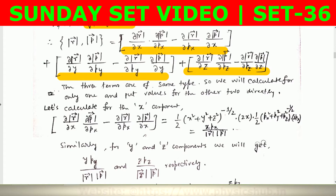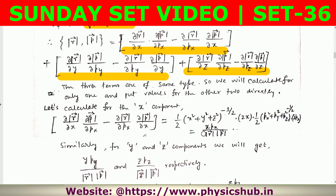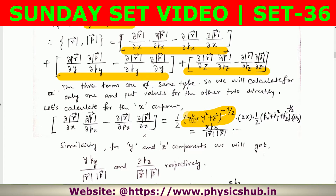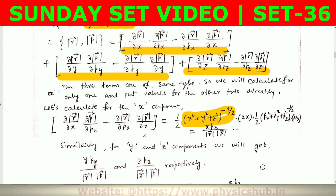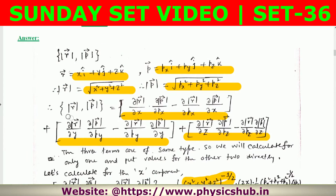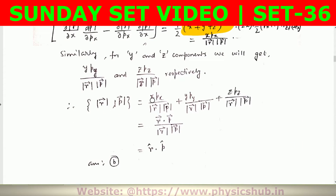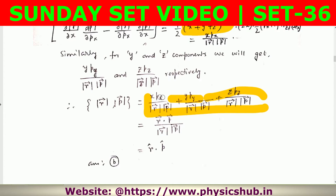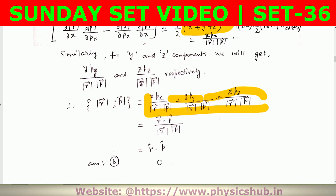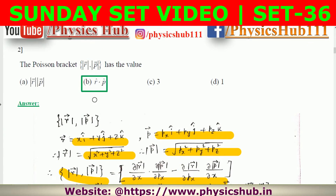For the x-component: (∂|r|/∂x)(∂|p|/∂px) − (∂|r|/∂px)(∂|p|/∂x), which evaluates to x·px / (|r|·|p|). Similarly, y and z components give y·py and z·pz divided by |r|·|p|. Summing all three: (x·px + y·py + z·pz) / (|r|·|p|) = (r⃗/|r|)·(p⃗/|p|) = r̂·p̂. This matches option B, so option B is correct.